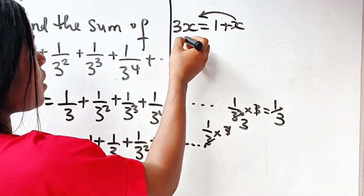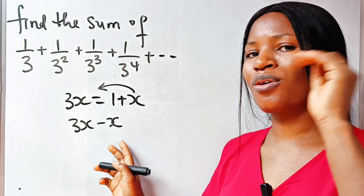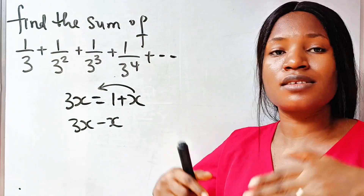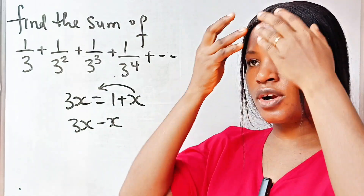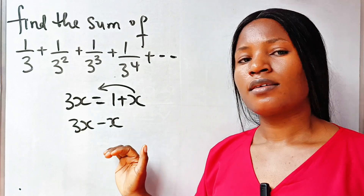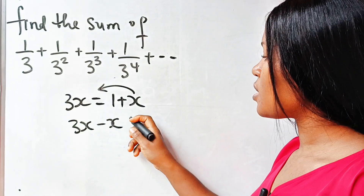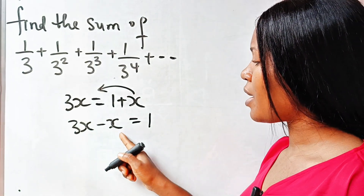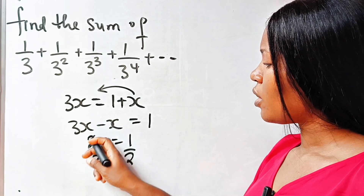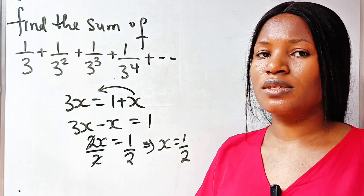Now let's transfer x to this side. We have 3x minus x equal to 1. The video cut off at this point — I continued solving without realizing. 3x minus x gives us 2x equals 1. Dividing both sides by 2, we still have x equals 1 over 2, which is exactly what we got using the first method.